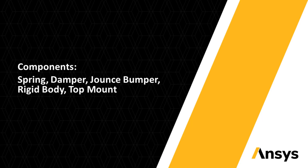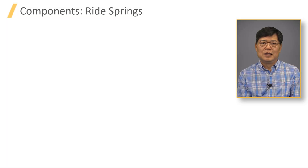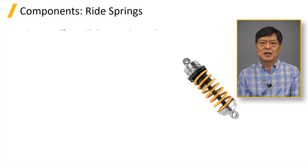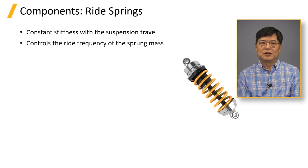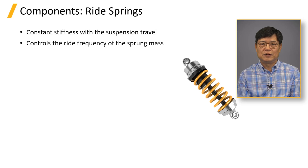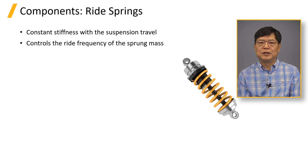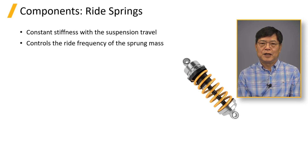Hello everyone. The right spring has a constant stiffness with the suspension travel. The spring rate controls the ride frequency of the sprung mass. The ride frequency ranges from 1 to 1.5 Hz in most cases. This is true in passenger vehicles, buses, heavy trucks, and even military vehicles.